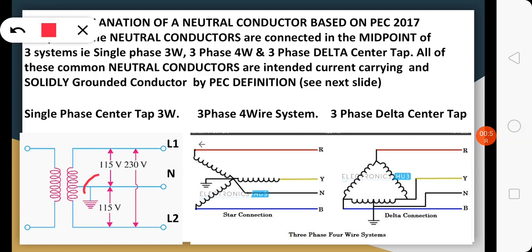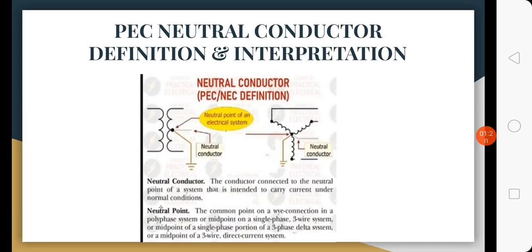The neutral conductor is connected to the midpoint of every system configuration: the single phase center tap three-wire system, the four-wire Y configuration, and the three-phase delta center tap. That is what the PEC definition is about. Let's go to the next slide. This is the PEC definition here that we discussed previously.